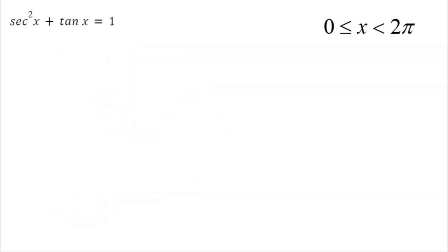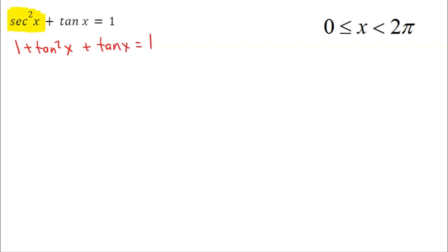Here's another one: secant squared of x plus tangent x equals 1. I'm thinking, how do I solve this when I have two different trig functions? I can't combine them; there's nothing common I could factor. That's where our identities are going to come in handy. I'm going to replace the secant squared with one of my Pythagorean identities — secant squared equals 1 plus tangent squared. Hopefully you remember that from the identities. So I'm literally just going to replace it, and now I have all tangents and I can factor.